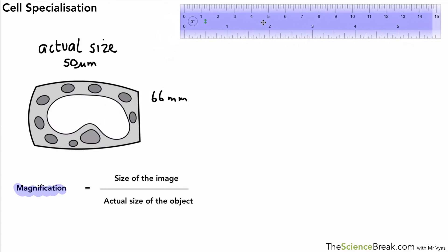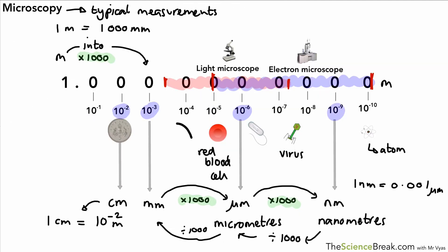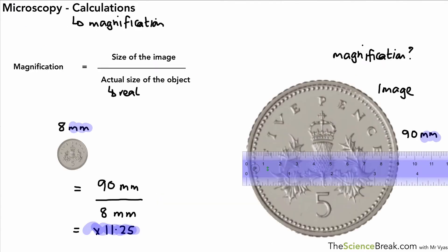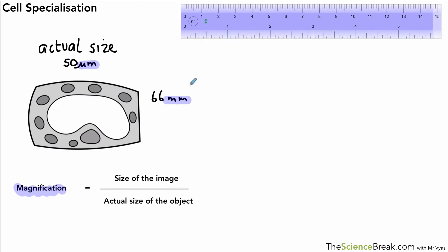We've got 66 millimeters for the image and 50 micrometers for the actual object. The slight problem is we can't do this calculation without making the units the same — we won't get the correct value with different units. We need to convert 66 millimeters into micrometers. Converting millimeters to micrometers is times a thousand, so we take our 66 millimeters and multiply by a thousand — hopefully you don't need a calculator — giving us 66,000 micrometers.